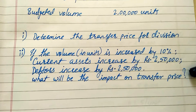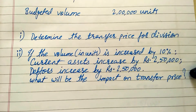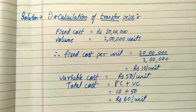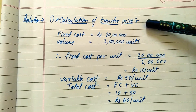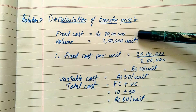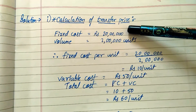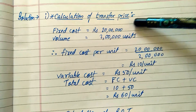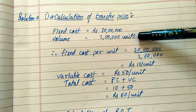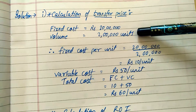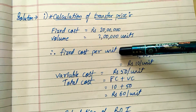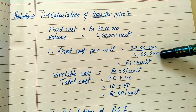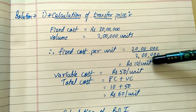Let's move to the solution. The first step is to calculate the total cost per unit. The fixed cost given to us in total is ₹20,00,000 and the budgeted volume is 2,00,000 units. So the fixed cost per unit is ₹20,00,000 divided by 2,00,000 units, which gives us ₹10 per unit.